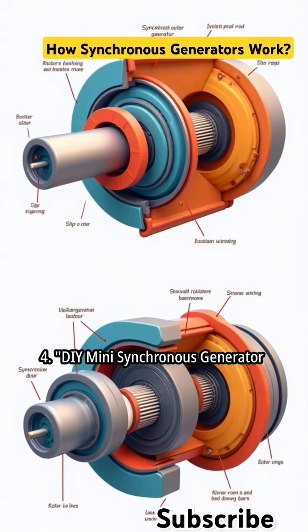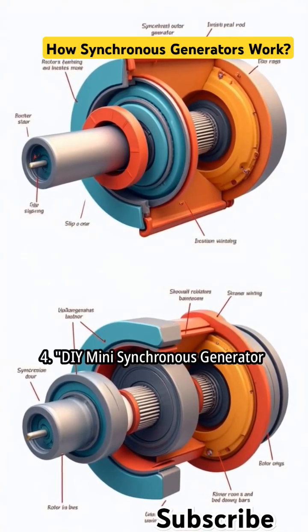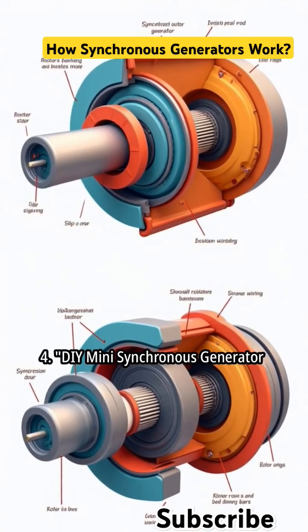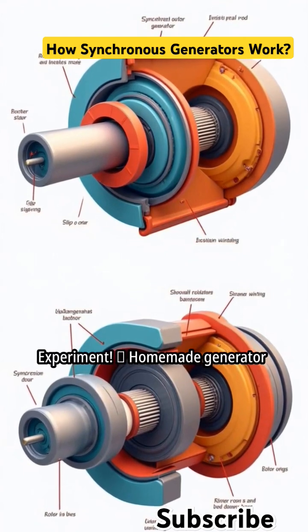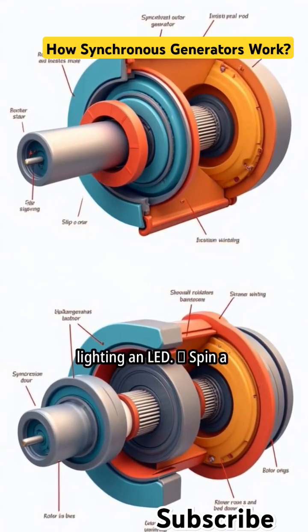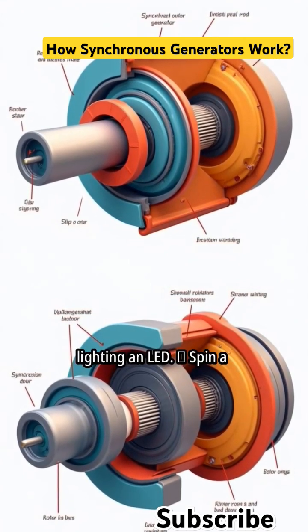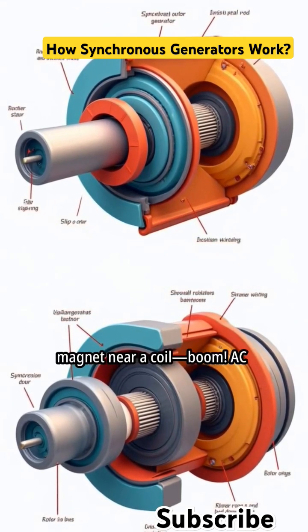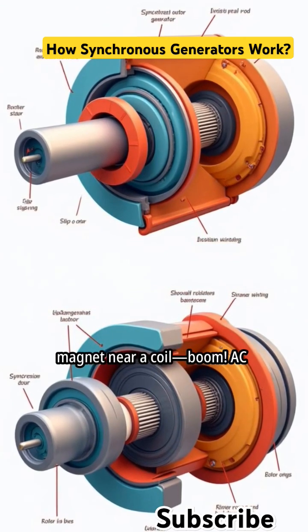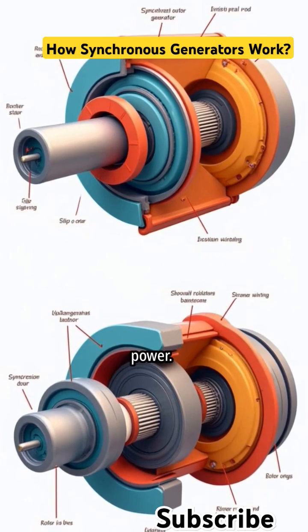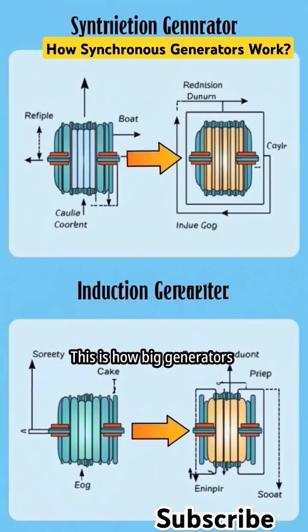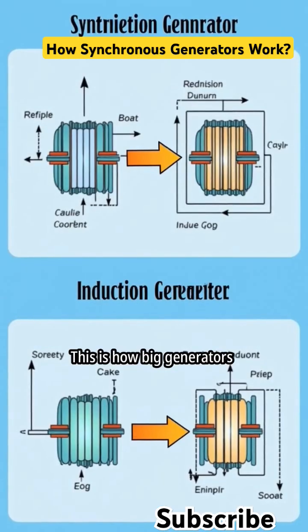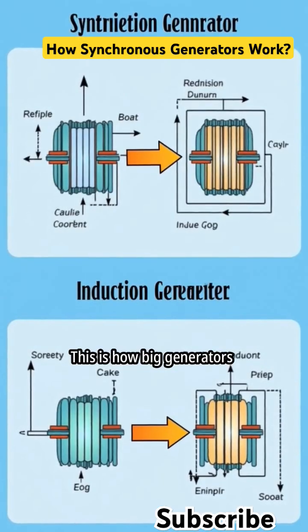DIY Mini Synchronous Generator Experiment: homemade generator lighting an LED. Spin a magnet near a coil — boom, AC power. This is how big generators work.